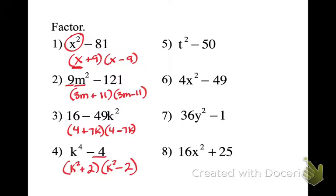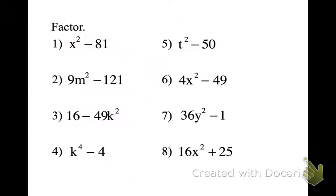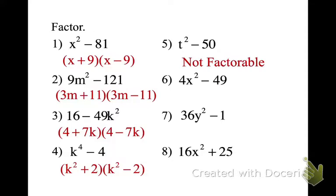Number 5, guess what? 50 is not a perfect square, so it can't be factored. There's no common factor. The next one, we're going to have 2x plus 7 and 2x minus 7. Next one is 6y plus 1 and 6y minus 1. Remember, 1 is a perfect square. And last but not least, not factorable. Why?